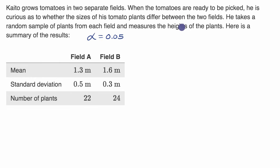Now let's work through this together. Like always, let's first construct our null hypothesis. That's going to be the situation where there is no difference between the mean sizes. So that would be that the mean size in field A is equal to the mean size in field B.